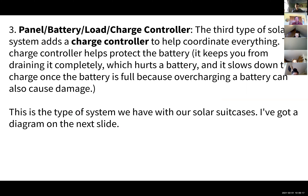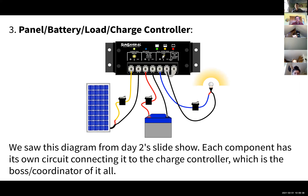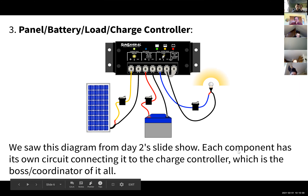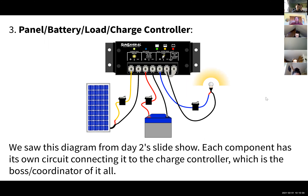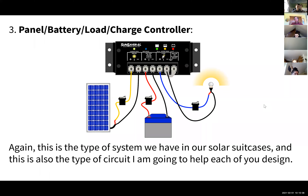The third type adds a charge controller. The charge controller coordinates everything — it prevents the battery from being drained too much, which can damage it, and it slows down charging when the battery is full to prevent overcharging. This is the kind of system we have in our solar suitcases. There's a separate circuit for the solar panel, the battery, and the load or loads, and the charge controller keeps track of and coordinates everything.